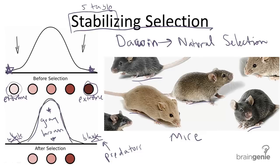So stabilizing selection, in summary, helps to stabilize the extremes of a trait, and thus you're getting that elimination of extremes.